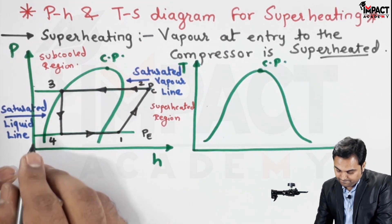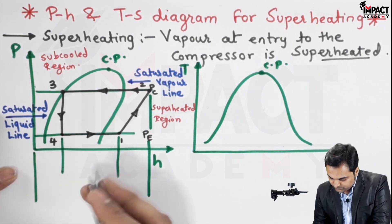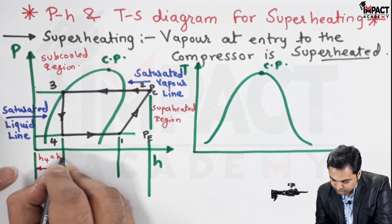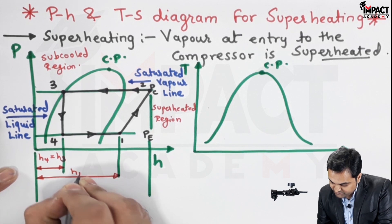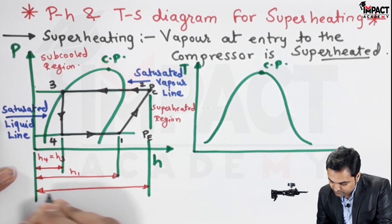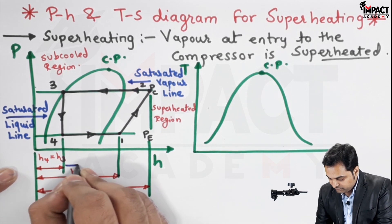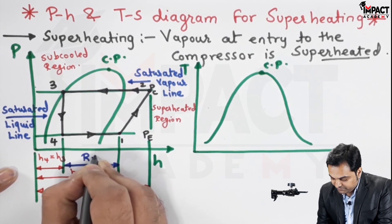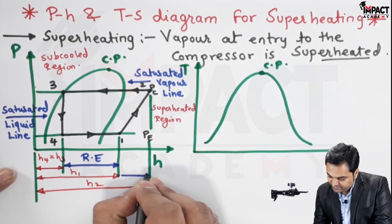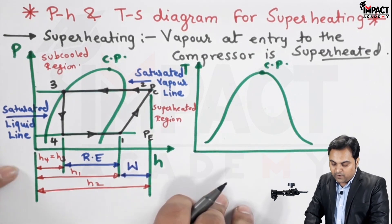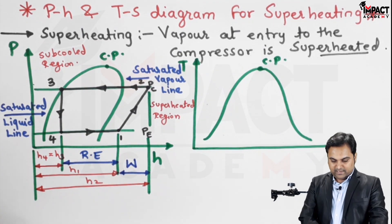Indicating the enthalpies on the diagram: h4 equals h3 due to constant enthalpy throttling. We have h1 and h2 marked on the diagram. The refrigeration effect is h1 minus h4. The work or power consumed by the compressor is h2 minus h1. After completing the P-H diagram, we'll now draw the T-S diagram.